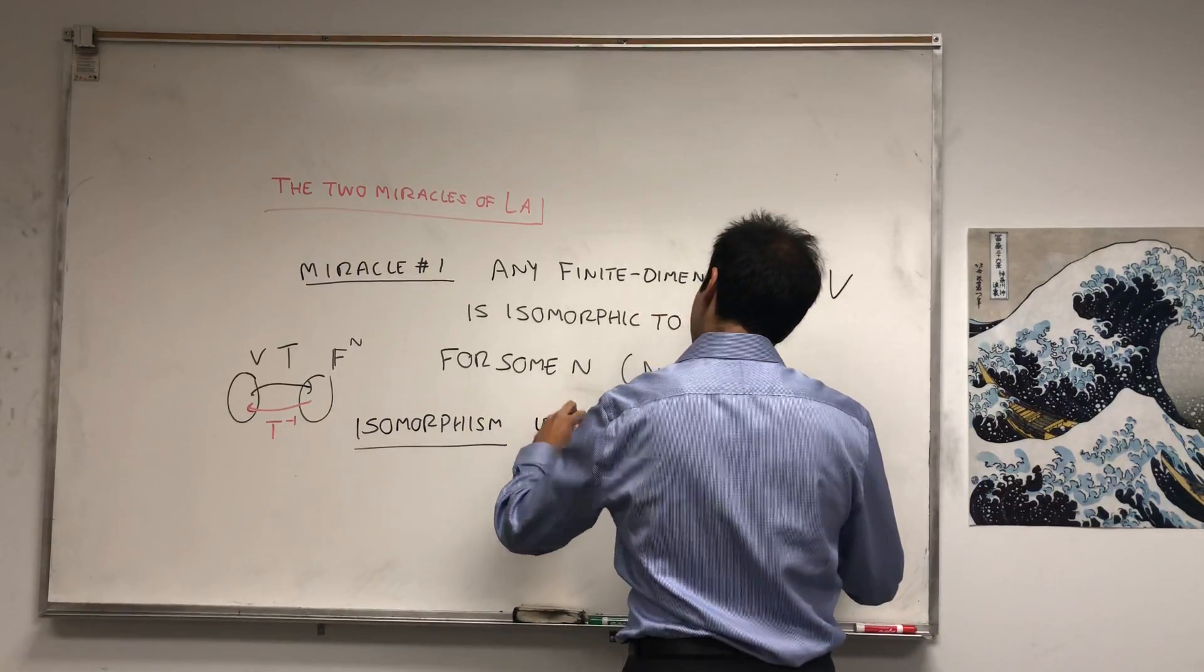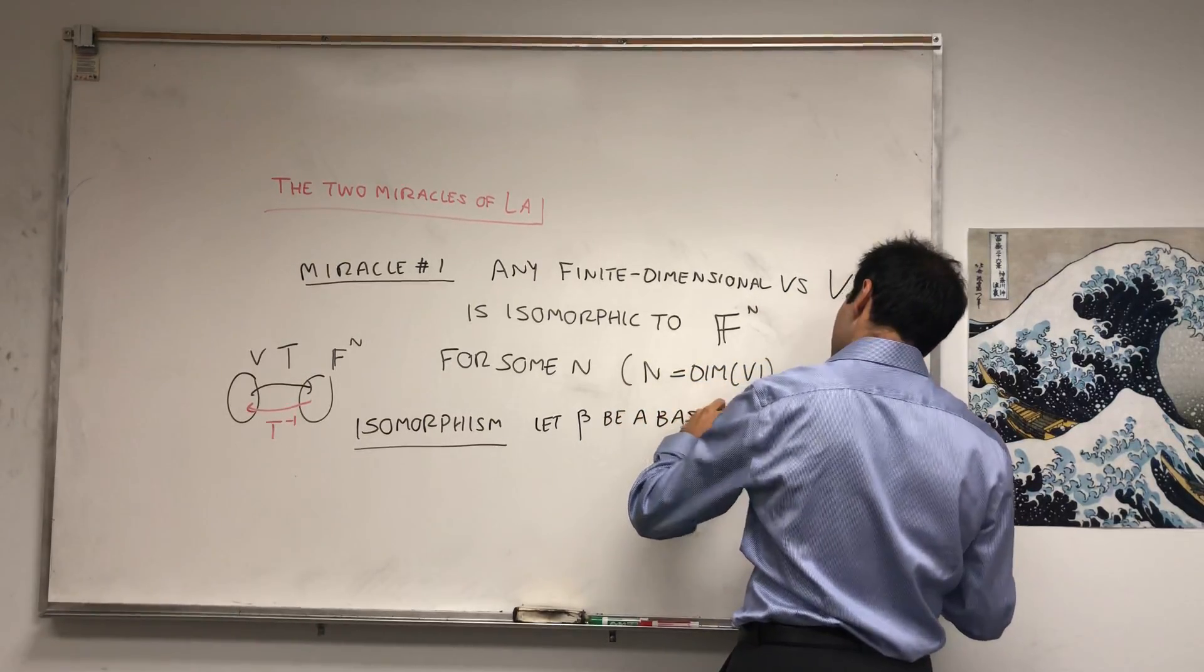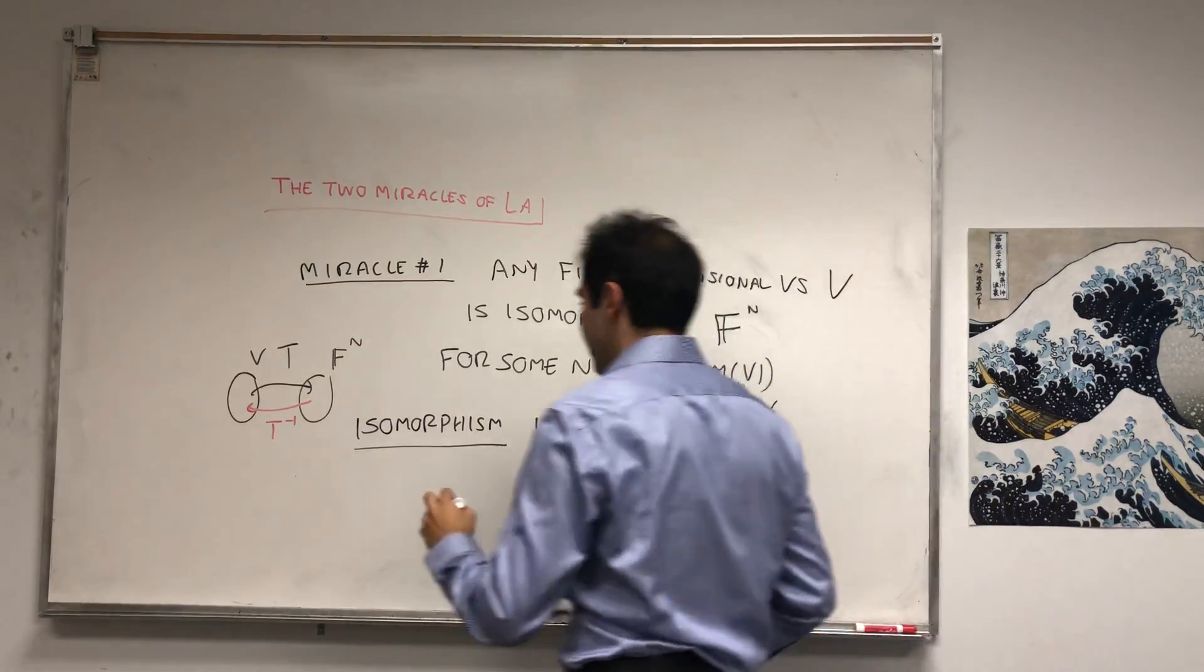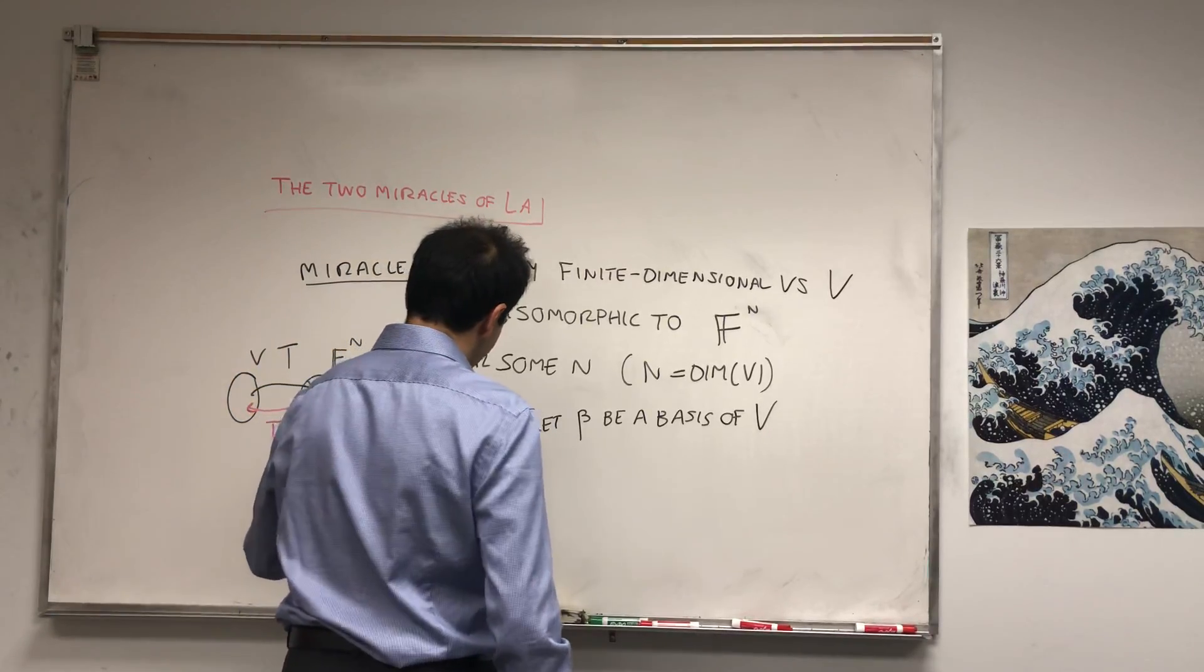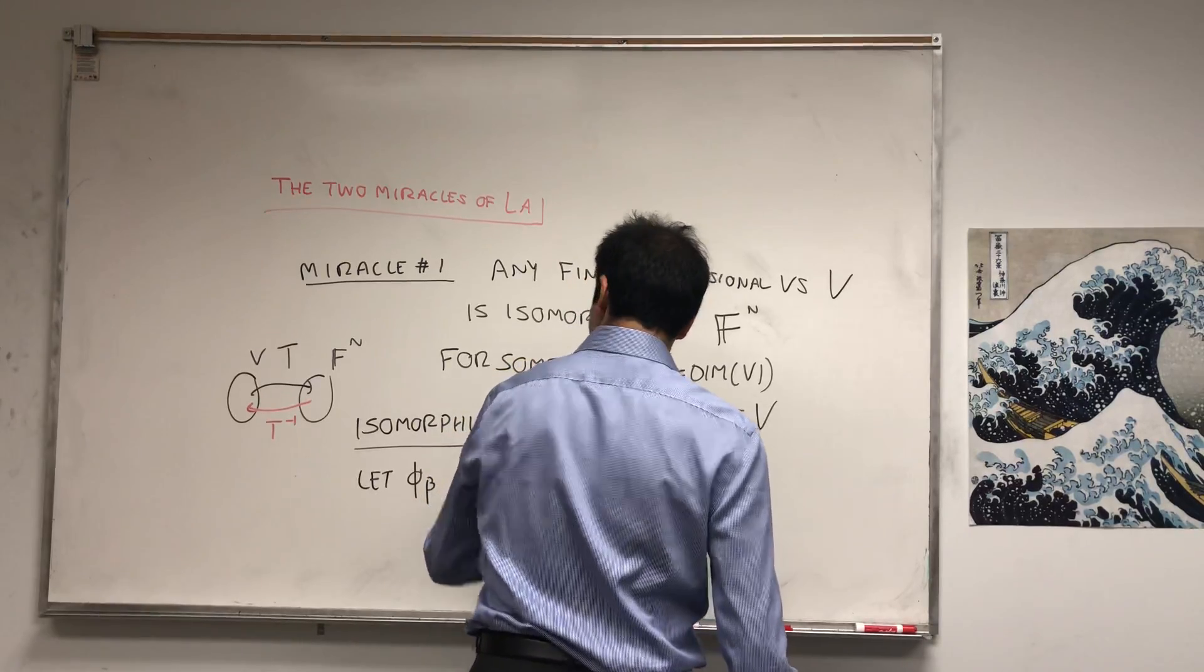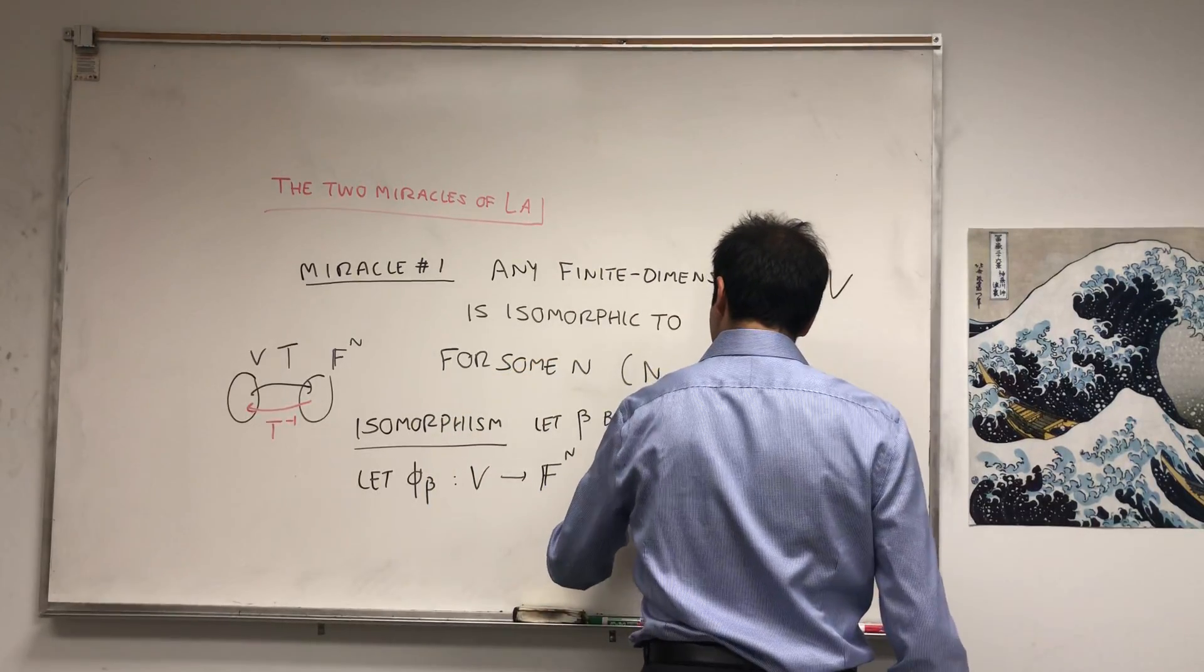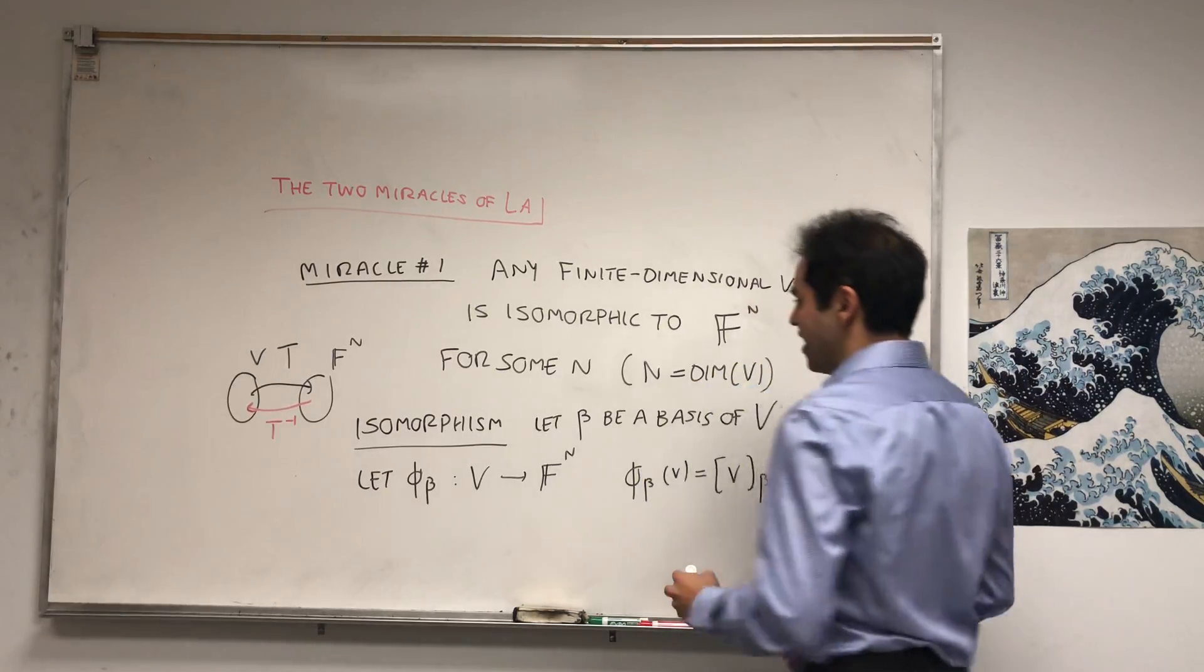And I like to call it phi_B for reasons that will be apparent in a second. So let beta be a basis for V. Phi_B of V goes from V to F^N, and simply phi_B of V just gives you the coordinates of V with respect to beta.